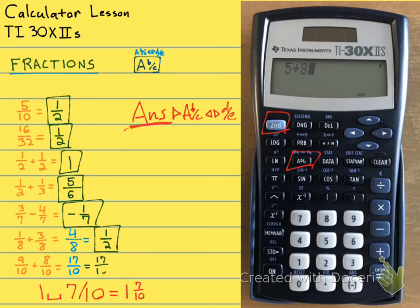And then what you can do is you can go second ABC equals 1 and 7 tenths. Second ABC equals 17 over 10. Second ABC equals 1 and 7 tenths. Second ABC equals 17 over 10. So we're always going to leave our answer as a fraction, an improper fraction. We're not going to leave our answer as a mixed number.